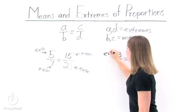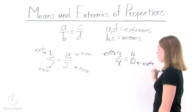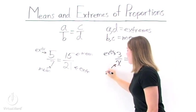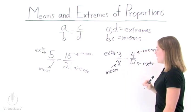Well, 3 is an extreme. 12 is also an extreme. x, our variable, is a mean, and 4 is a mean.